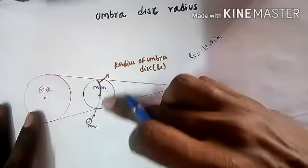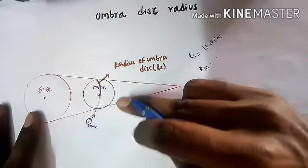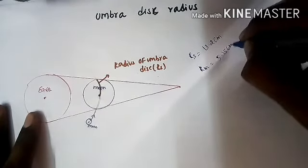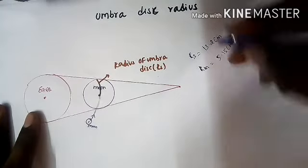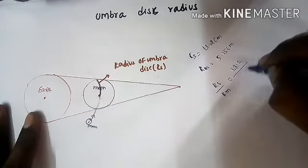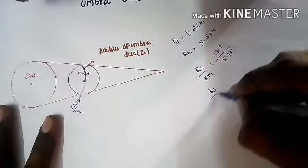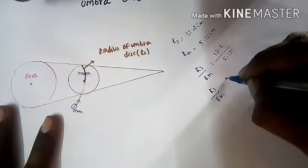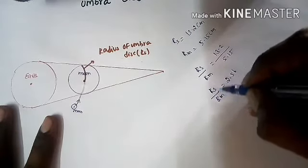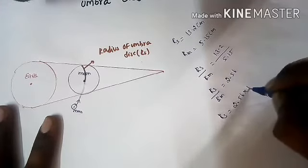Next, the apparent radius of the moon, rm, is equal to 5.15 cm. So the ratio of the radii is rs divided by rm, which equals 13.2 divided by 5.15. After simplification, rs divided by rm equals 2.56.